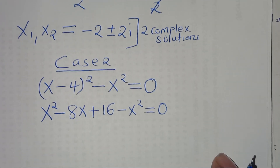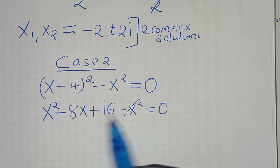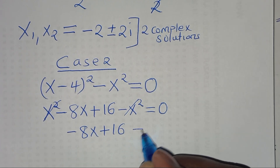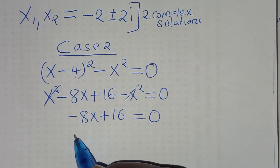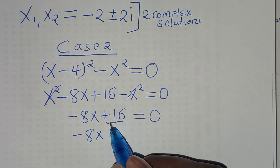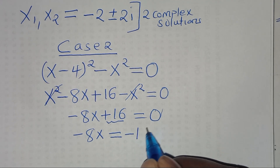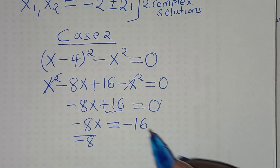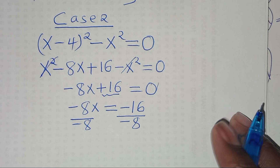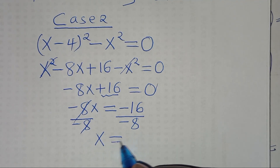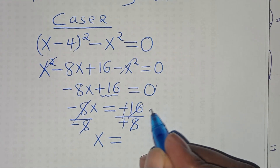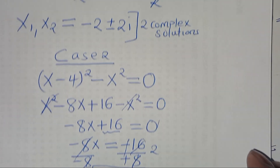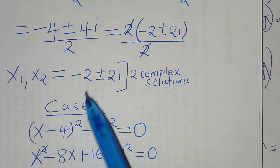The x² terms cancel, leaving minus 8x plus 16 equals 0. Taking 16 to the right hand side gives minus 8x equals negative 16. Dividing both sides by negative 8 gives x equals 2. So we have three solutions total: two complex solutions, negative 2 plus or minus 2i, and one real solution, x equals 2.